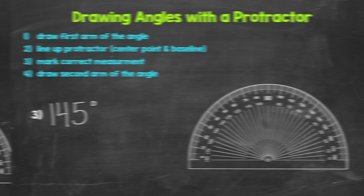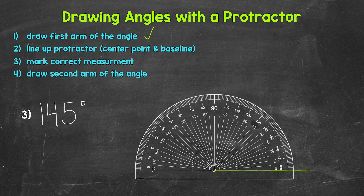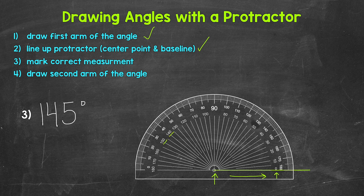Let's move on to number three. For number three, we need to draw a 145 degree angle. Let's start by drawing the first arm, and let's put a dot on the left side — that's where the vertex will be. Next, let's line the protractor up. The center point is on the dot and the baseline is on the arm. Now we need to mark the correct measurement. Well, 145 degrees is obtuse, and we need the inside numbers based on the zero degrees the arm goes through. 140 degrees is right here and 150 degrees is right here, so 145 degrees is right in between. Let's put our mark right outside of the protractor — we have the correct measurement marked.